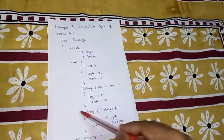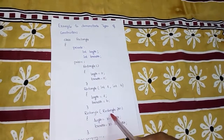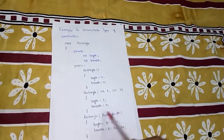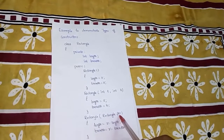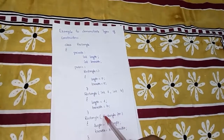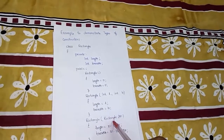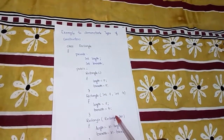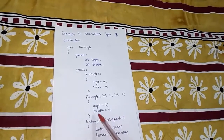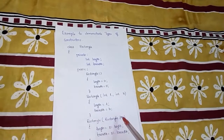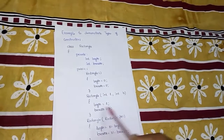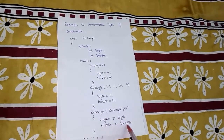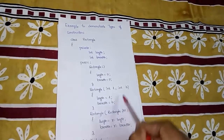The third constructor is 'rectangle' with parameter 'rectangle& R1'. Here rectangle is the class and R1 is an object, so this parameter is of object type, referring to another object. A constructor that has an argument which is a reference to an object is called a copy constructor. We assign the values from R1 to length and breadth: length equals R1.length and breadth equals R1.breadth.